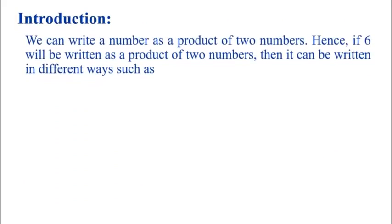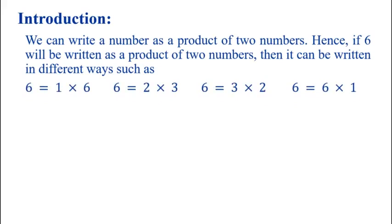First, introduction: we can write a number as a product of two numbers. If 6 is written as a product of two numbers, it can be written in different ways such as: 6 is equal to 1 into 6, or 6 is equal to 2 into 3, or 6 is equal to 3 into 2, or 6 is equal to 6 into 1. So, 6 can be written in different ways.